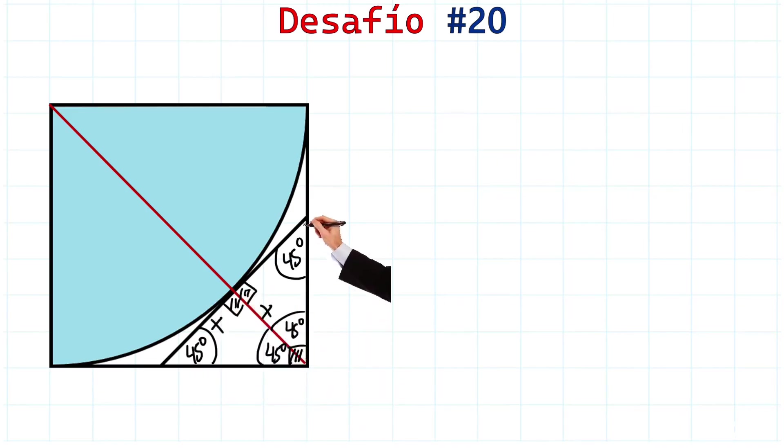So, if we have another isosceles triangle here, if this is X, this is also X. Notice. Awesome.